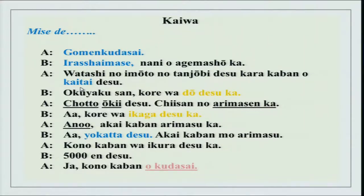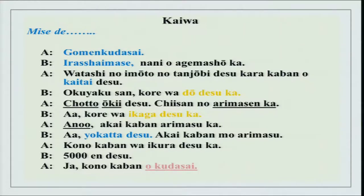I want to buy a bag. 'Okyaku san, kore wa dou desu ka?' — how about this one? 'Chotto ooki desu' — it is a little big. 'Chiisai no arimasen ka?' — do you have a smaller one? 'Kore wa ikaga desu ka?' — how about this one? 'Ano akai kaban arimasu ka?' — do you have a red bag? 'Yokatta desu. Akai kaban mo arimasu.' — I have a red bag also. 'Kono kaban wa ikura desu ka? Go-sen yen desu. Ja, kono kaban wo kudasai.' — please give me this bag.